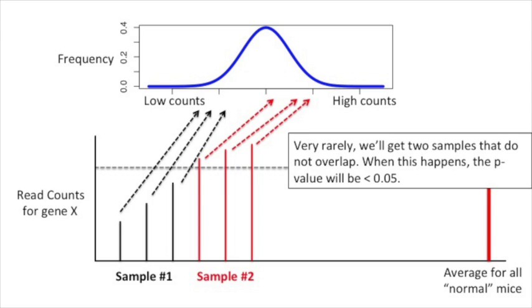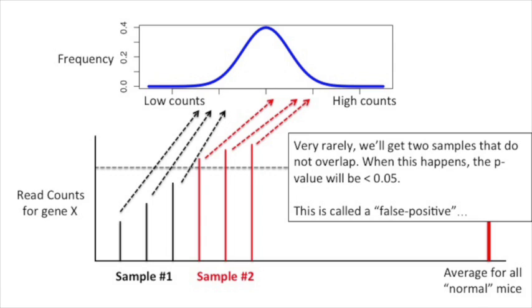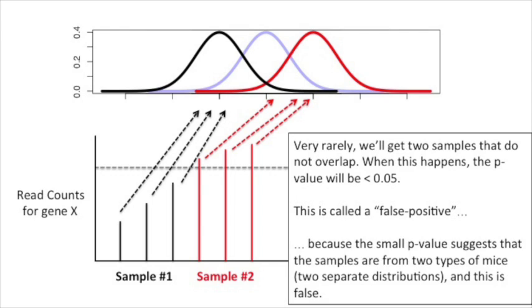Now, imagine we compare sample number one to another three measurements taken from normal, wild-type mice. We'll call these new measurements sample number two. Again, these three measurements come from the middle of the distribution. If we did a statistical test to compare sample number one to sample number two, the p-value would be large, greater than 0.05, because the two samples overlap. Very rarely, we'll get two samples that do not overlap. When this happens, the p-value will be less than 0.05. This is called a false positive, because the small p-value suggests that the samples are from two separate distributions, and this is false.